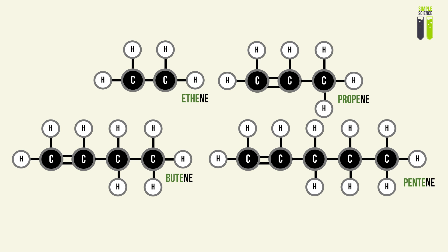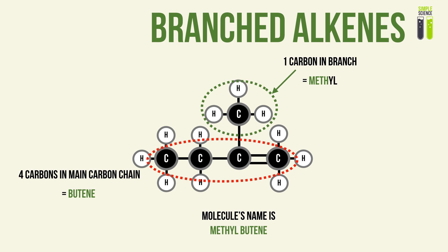Let's look at the other possible alkenes in the homologous series. Just like alkanes, alkenes can also exist as branched molecules, whereby you have a main carbon chain and attached to it is a branched carbon chain or a simple branch group. In this case, we have a branched alkene made up of a main carbon chain of four carbon atoms, including a double bond.